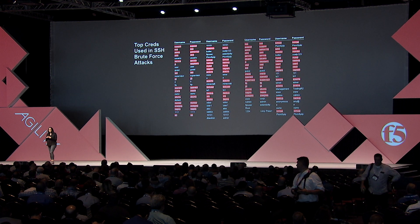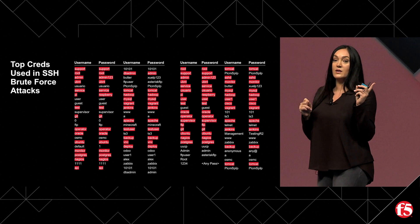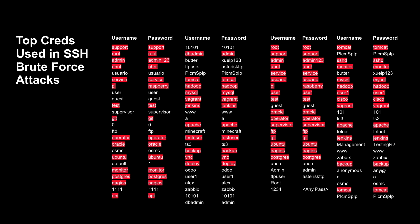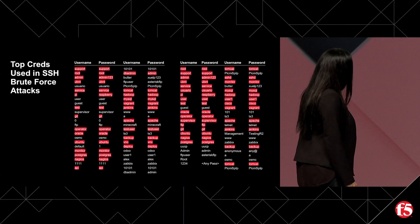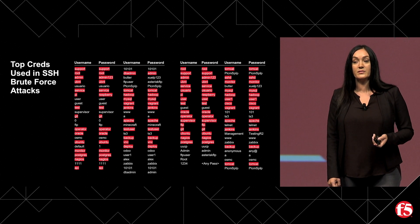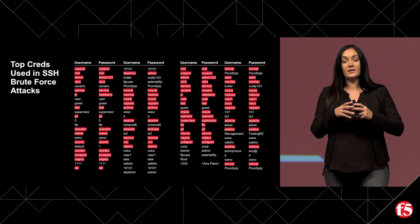On reducing your attack surface: what I'm showing you here is a list of top SSH brute force attacked credentials. Everything highlighted in red are applications you're likely using in your environments — Jenkins, MySQL, Hadoop, Nagios, Postgres, Ubuntu, GitHub, Oracle. If you're using vendor default credentials in production, your systems are probably owned right now. SSH brute force attacks are literally the most voluminous attack that goes on on the internet on a regular basis, and they're always looking for vendor default credentials.